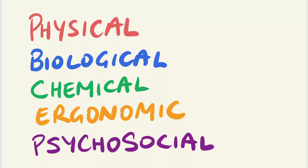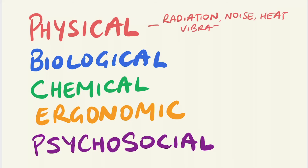Each of these categories I'll make a separate future video, but to give brief explanations with some examples. Physical hazards are defined as factors in the environment that can cause harm to the body without contact, resulting from a release of energy. Some examples include radiation, noise, heat, and vibration.